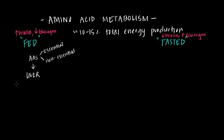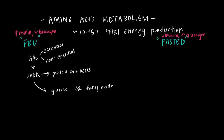Once amino acids are broken down in the small intestine, they travel via the bloodstream directly to the liver, just like glucose. Once the amino acids have made it to the liver, several things can happen. The liver can use these amino acids directly for protein synthesis, but it can also convert any excess amino acids into glucose and/or fatty acids, stored as glycogen in the liver or as triacylglycerides in adipose tissue.